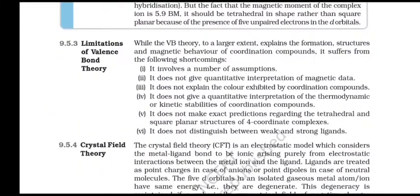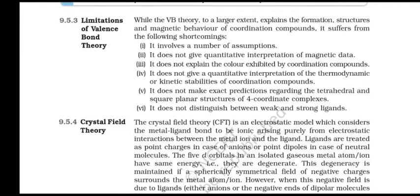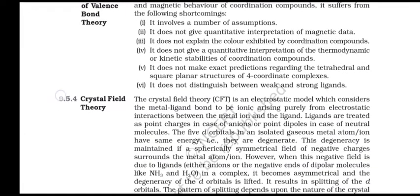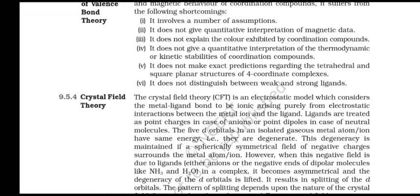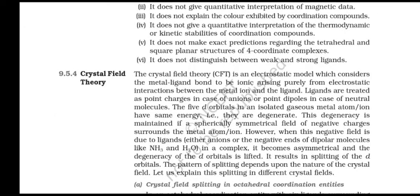Limitations of VBT: While VBT largely explains the formation, structures, and magnetic behavior of coordination compounds, it suffers from the following shortcomings: it involves a number of assumptions; it does not give a quantitative interpretation of magnetic data; it does not explain the color exhibited by coordination compounds; it does not give a quantitative interpretation of thermodynamic or kinetic stabilities; it does not make exact predictions regarding tetrahedral versus square planar structures of four-coordinate compounds; and it does not distinguish between weak and strong ligands.